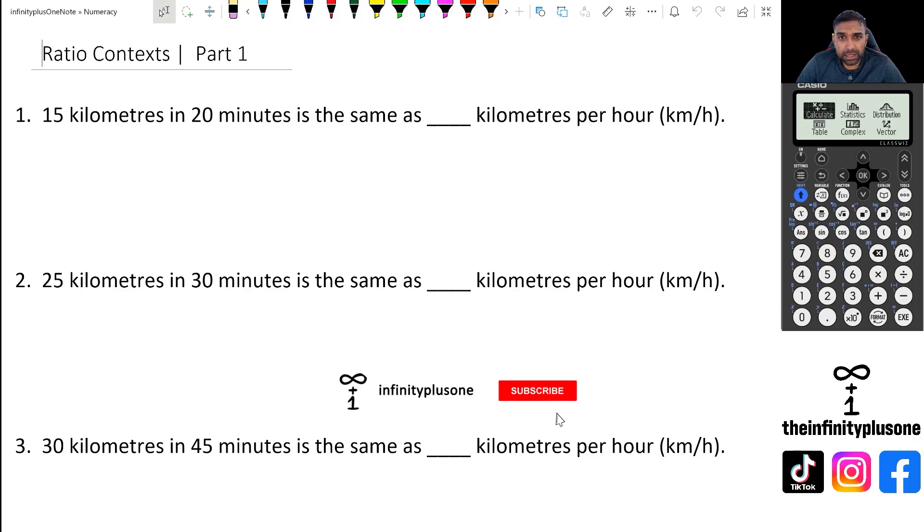Alright, so looking at this question one here, we've got 15 kilometers that's been done in 20 minutes, and we want to try and figure out what is that as a speed per hour. So we know that in one hour there is 60 minutes, so we've got to try and convert this ratio into 60 minutes. So the way we're going to write it is 15 to 20.